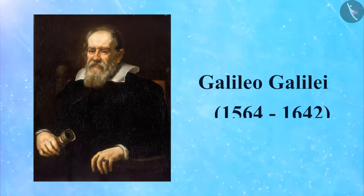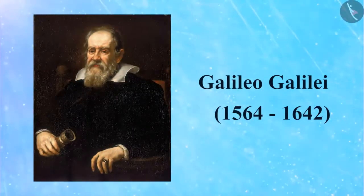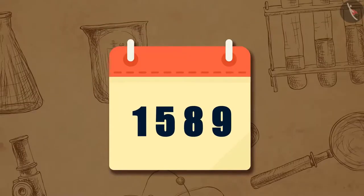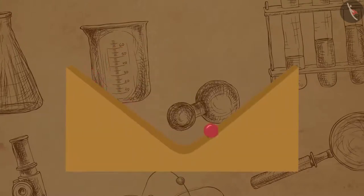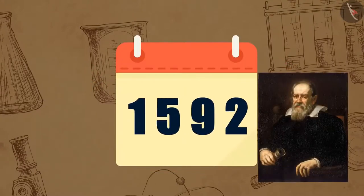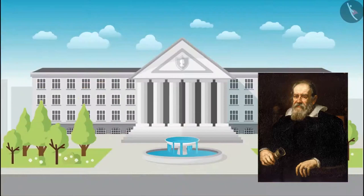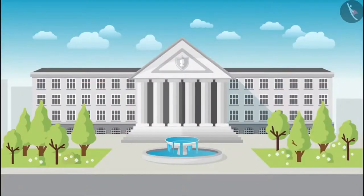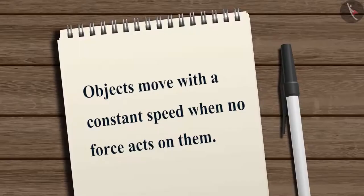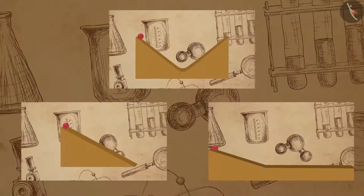Galileo Galilei had a keen interest in mathematics since his childhood. In 1589, in a series of essays, Galileo presented theories about falling objects using an inclined plane. In 1592 he was appointed professor of mathematics at the University of Padua, where he continued his study of motion on inclined planes and reasoned that objects move with a constant speed when no force acts on them.